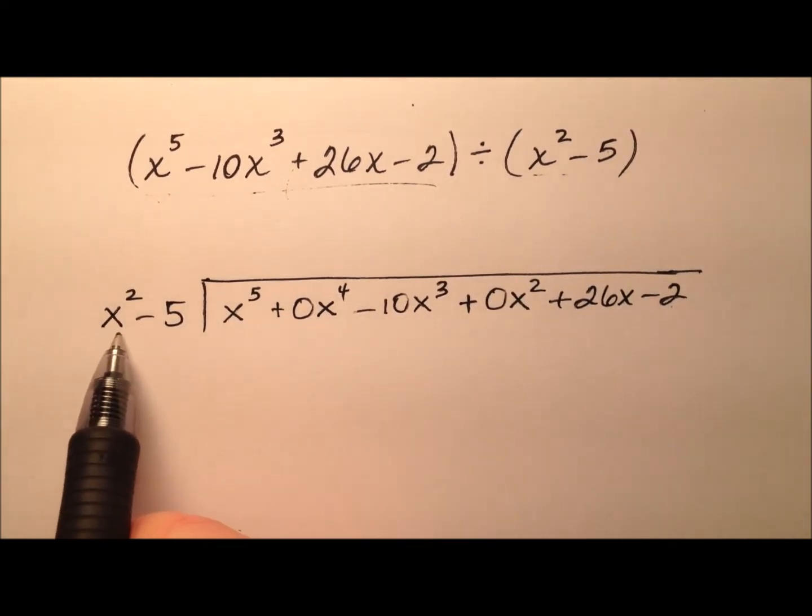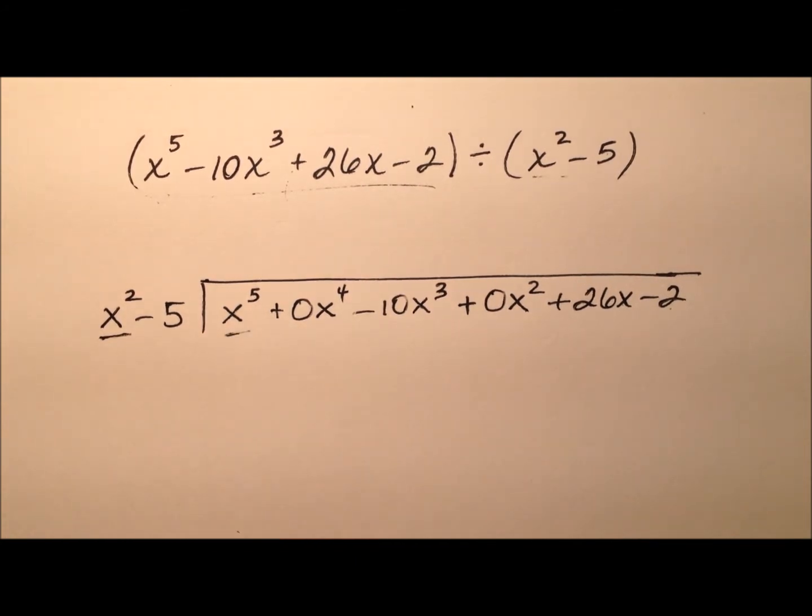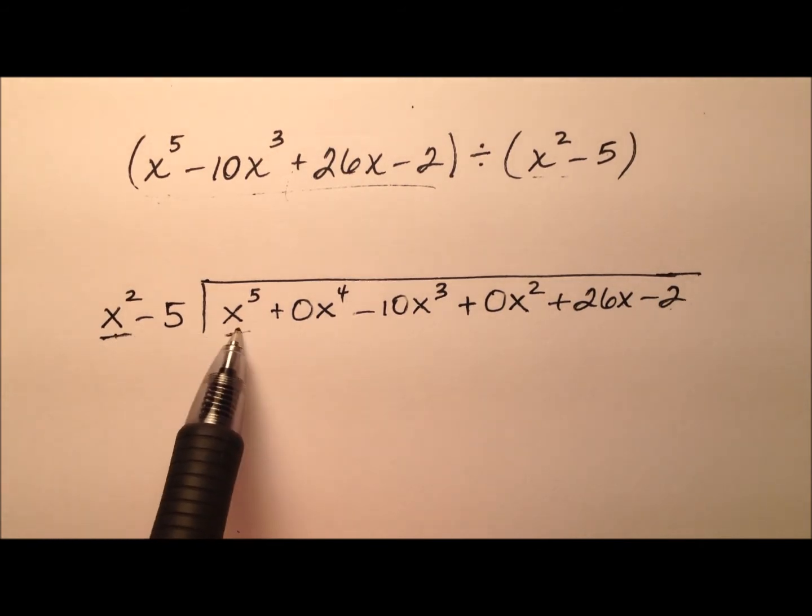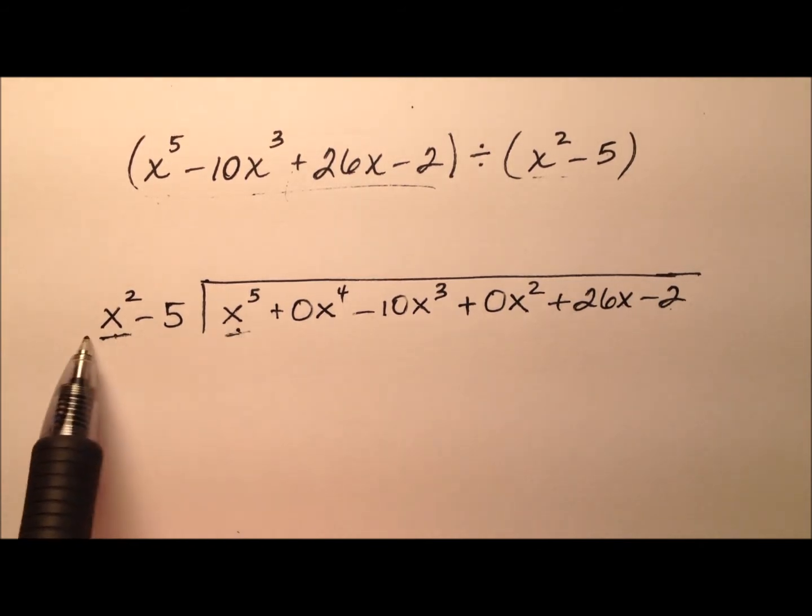Okay so let's get on with it here. So we have the x squared and the x to the fifth as far as our first terms are concerned. So what do I need to multiply by x squared to get x to the fifth? Well it seems like x cubed right?